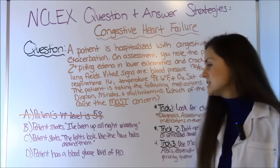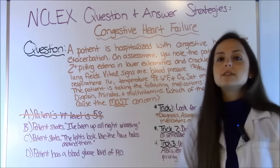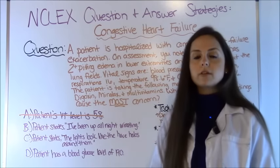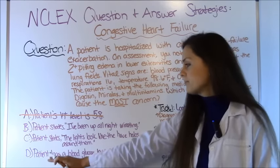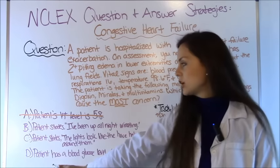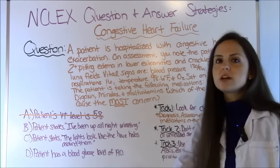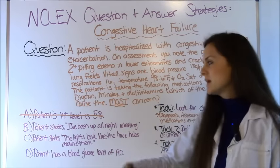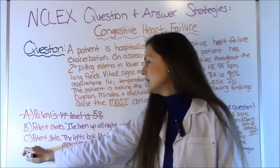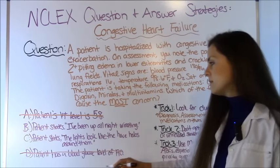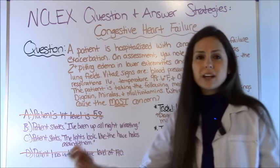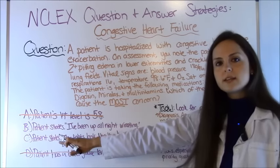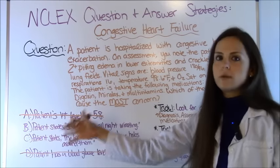For option D, the patient has a blood glucose level of 190, which is a little high. However, compared to the other two remaining options, it's not as concerning. There's only one right answer, so it's safe to eliminate option D — it's really a distraction. We can treat elevated blood glucose, but it doesn't take precedence over what's happening with options B and C.